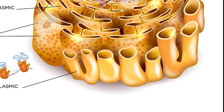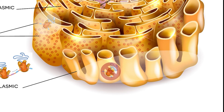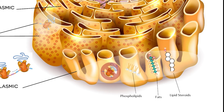By contrast, the smooth endoplasmic reticulum has no ribosomes attached to its surface. The smooth endoplasmic reticulum is a series of sacs that extend out of the rough endoplasmic reticulum. Since it has no membrane-bound ribosomes, the smooth ER carries out a slightly different function. These chambers are responsible for creating lipids, like phospholipids, fat molecules, and lipid-based steroids.